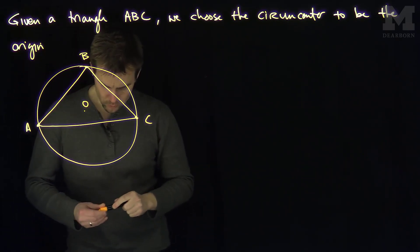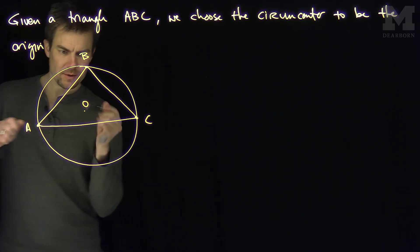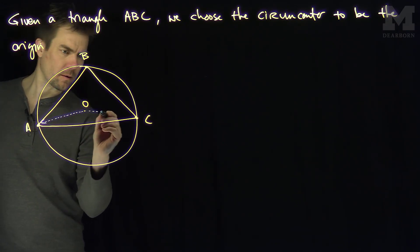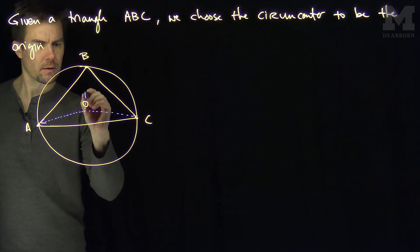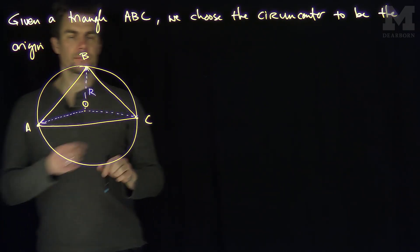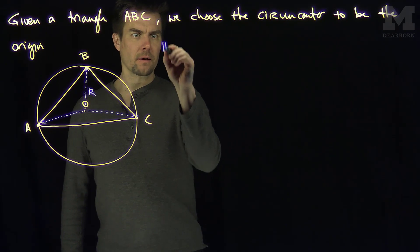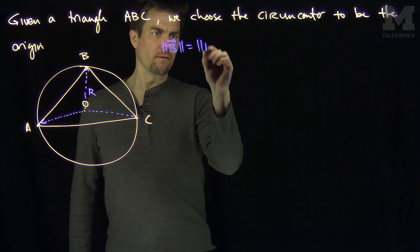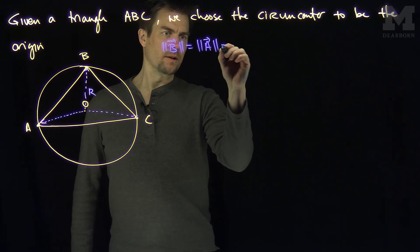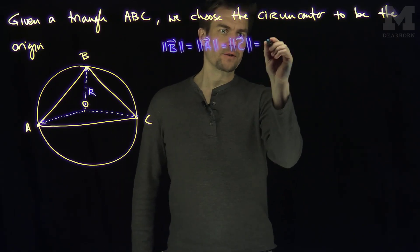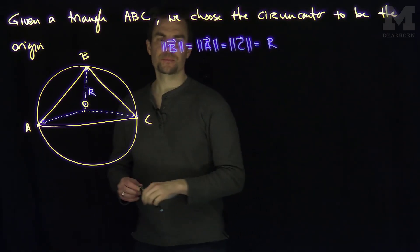So with this choice of origin, we know the length of any vector will be R. So in other words, the length of the vector B is equal to the length of the vector A is equal to the length of the vector C, with the origin being the circumcenter, and that's equal to R, the circumradius.